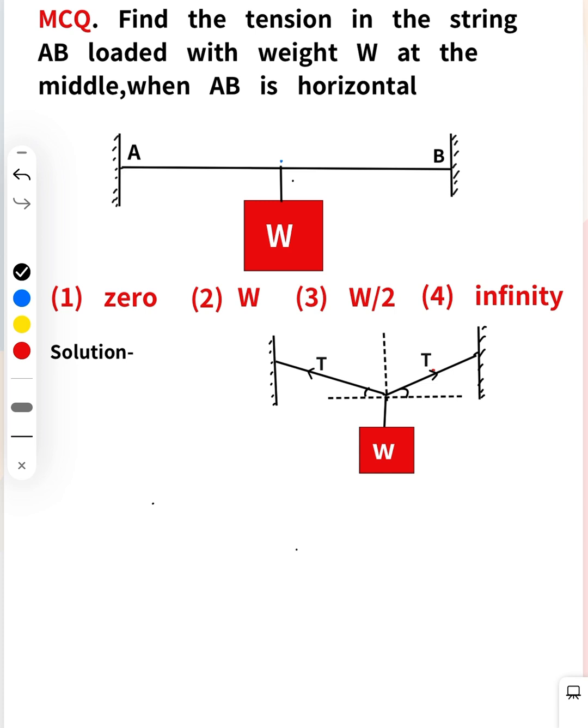If this one is T, both strings are the same so tension is the same. If this angle is theta and this angle is also theta because of the middle point, then that is T sin theta and here also T sin theta.